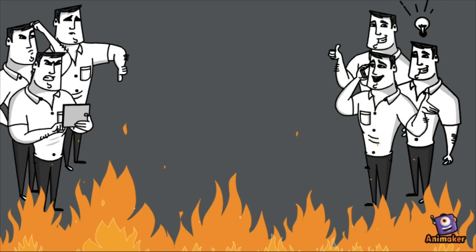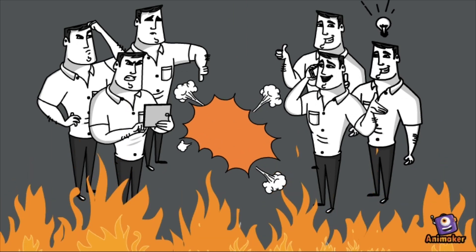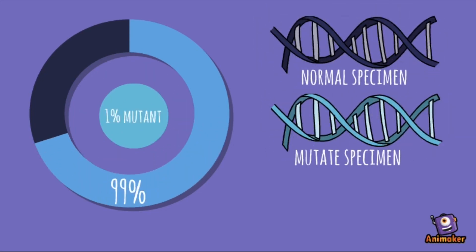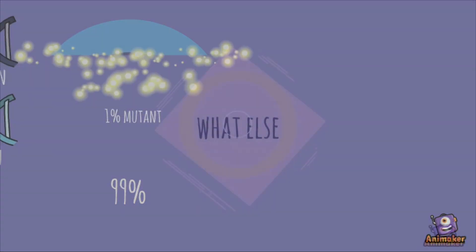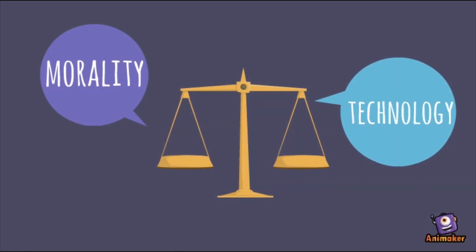A lot of scientists assume that those modified organisms cannot survive and breed in natural environments, but no one can guarantee that mutations won't happen, and in turn affect the entire ecological system. Besides, the morality of synthetic biology and the ethical issues of synthetic biology have been questioned by the public.